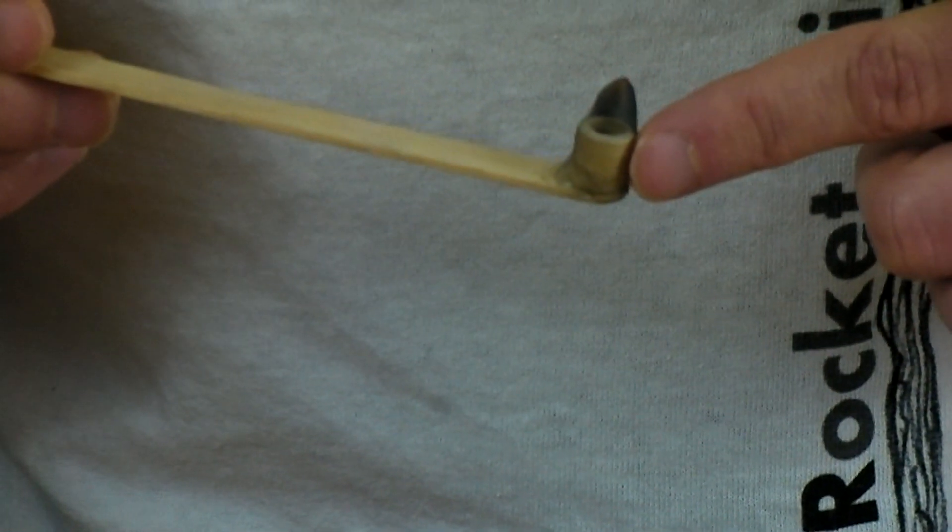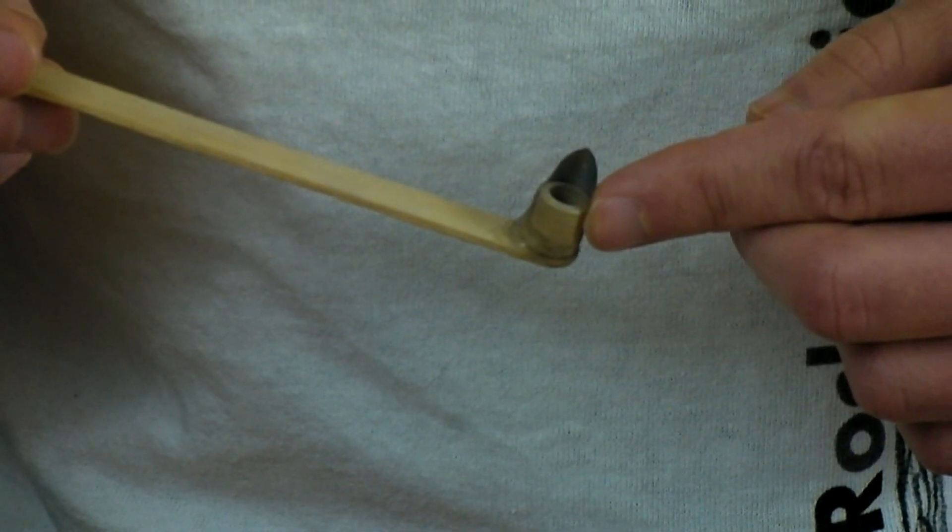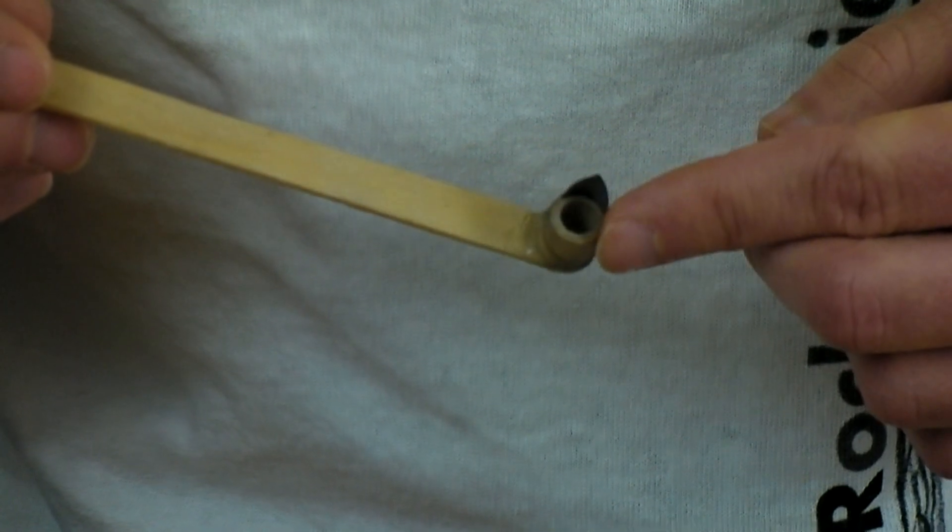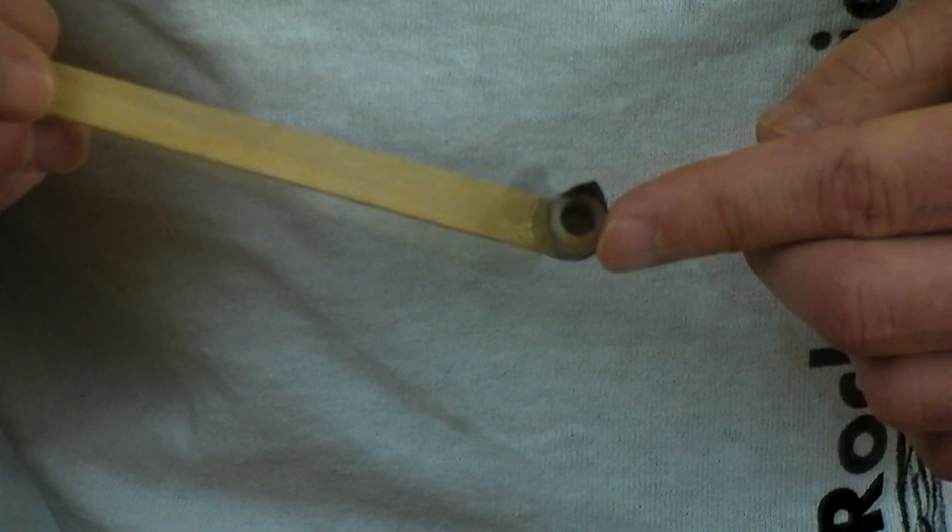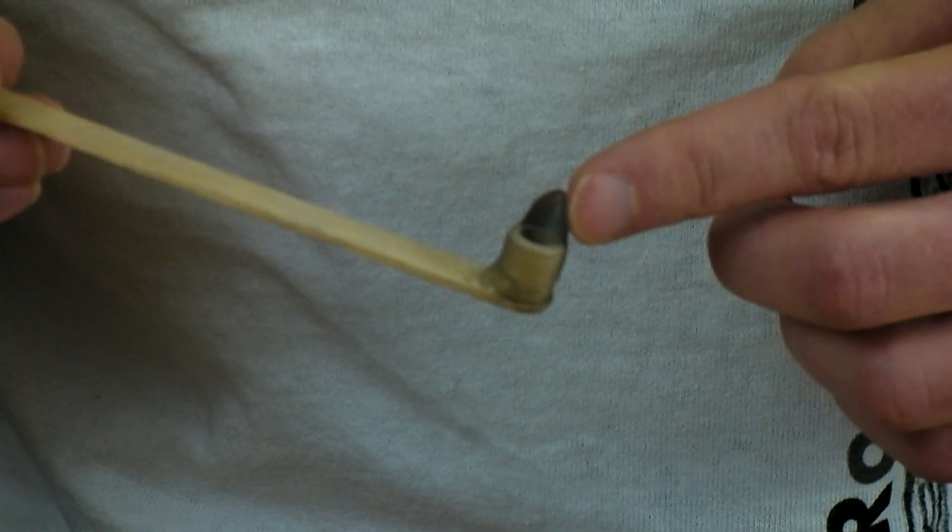Now when ramming anything it's important you use consistent increments of composition. Now to do that with these spolets I've made a little scoop out of a popsicle stick and a piece of a tube itself. I also have a little piece of an aluminum can on here to help funnel the black powder into the tube.